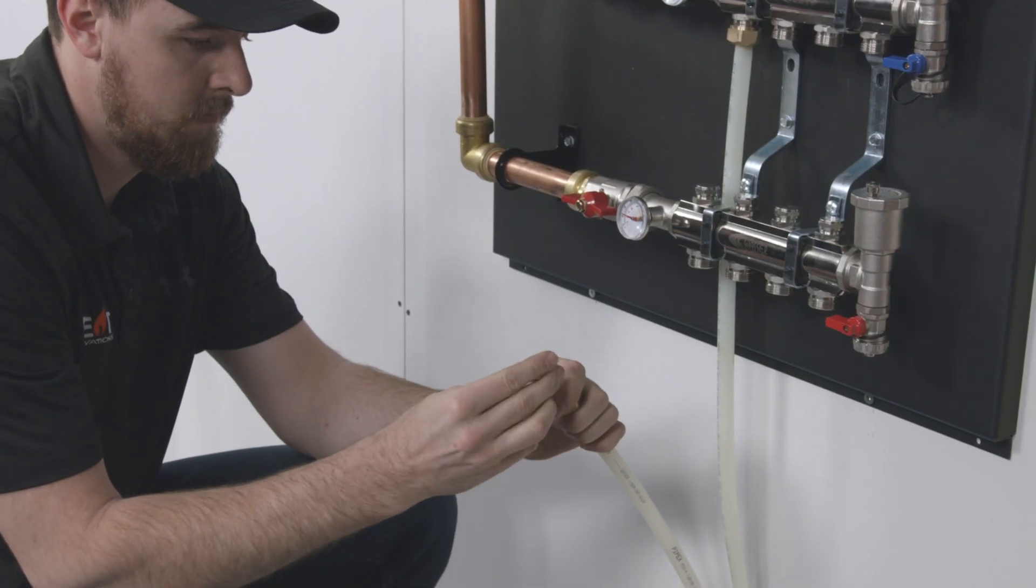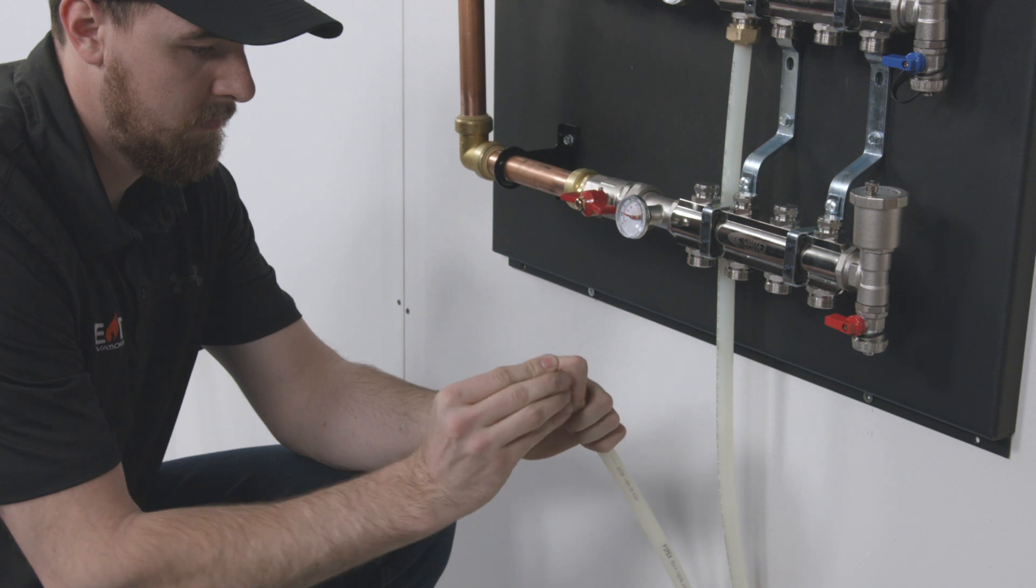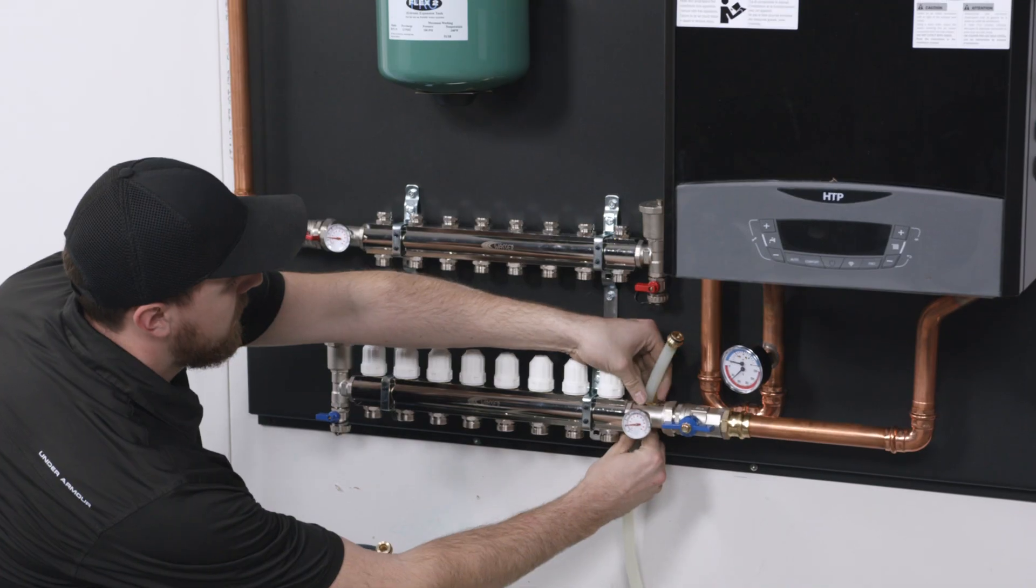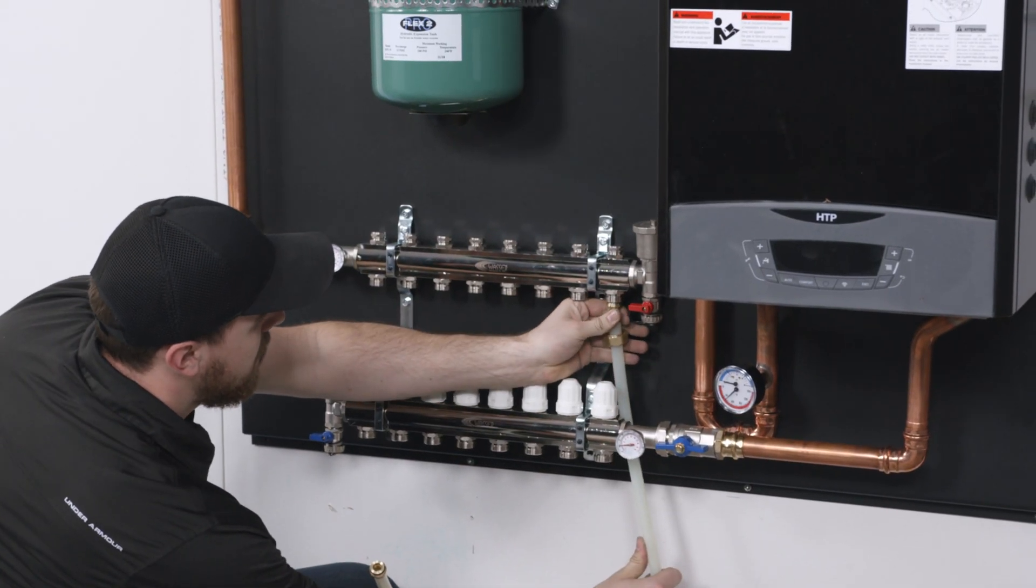Slide the nut and split ring onto the pipe. Ream the pipe and grease the manifold adapter O-rings. Thread the nut onto the manifold by hand.